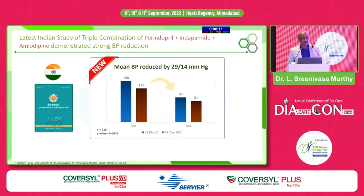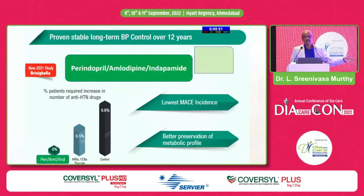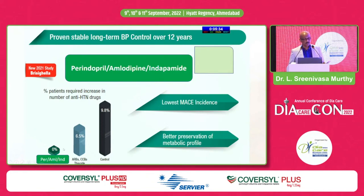An Indian study published in JAPI — in which we participated — showed mean BP reduced by 30/15 mmHg within two months. Among 218 patients, the target was reached by end of 60 days, with 91% compliance and 99% patient satisfaction. The Brissigella study from Italy followed patients for about 12 years with this combination and found better preservation of metabolic profile and lowest MACE incidence with perindopril-indapamide versus ARBs and others.